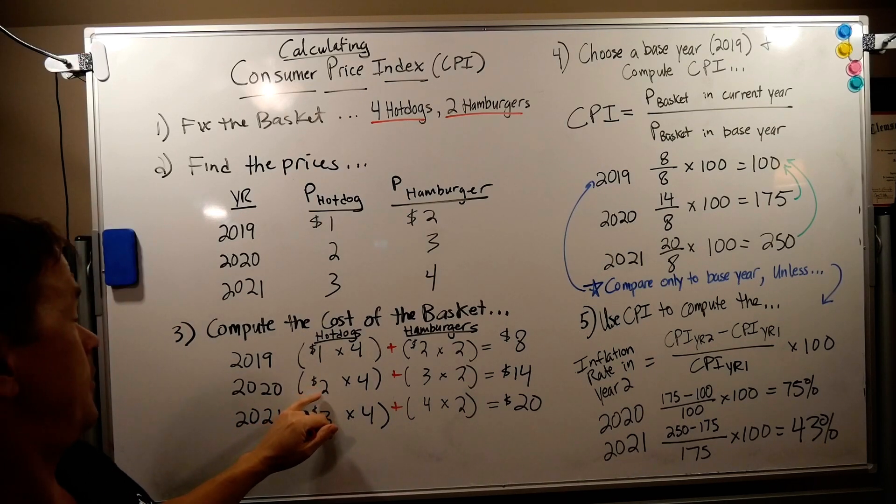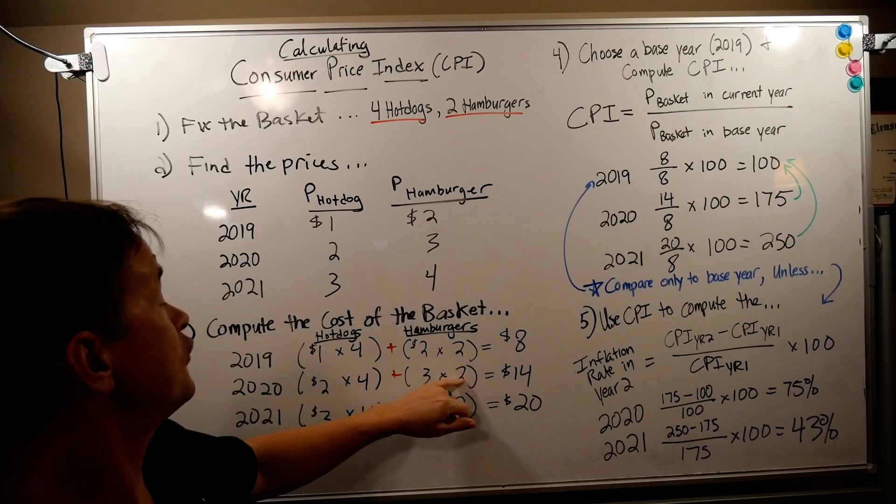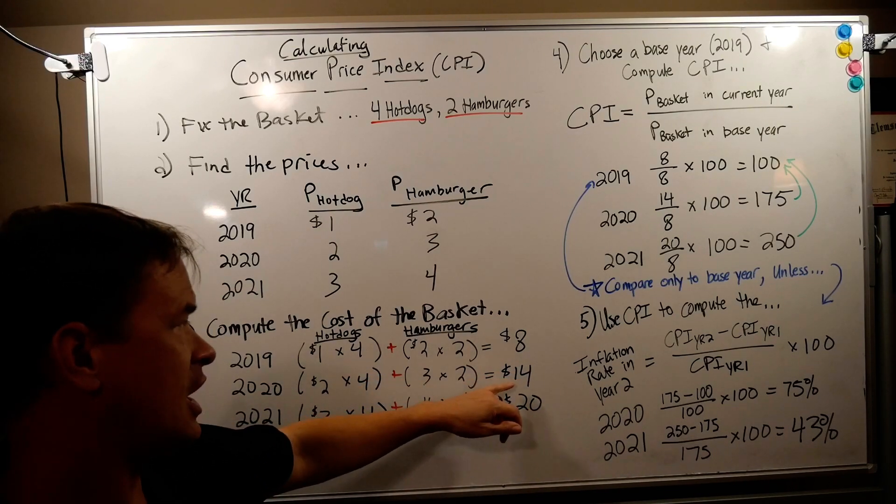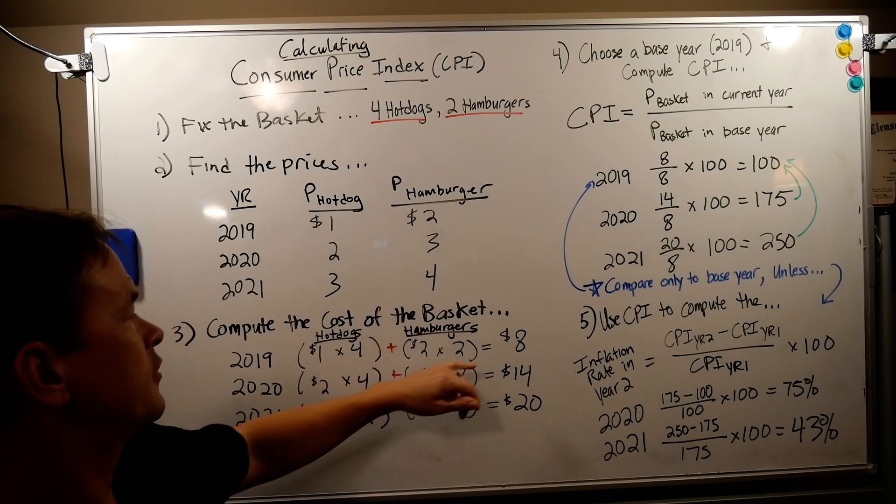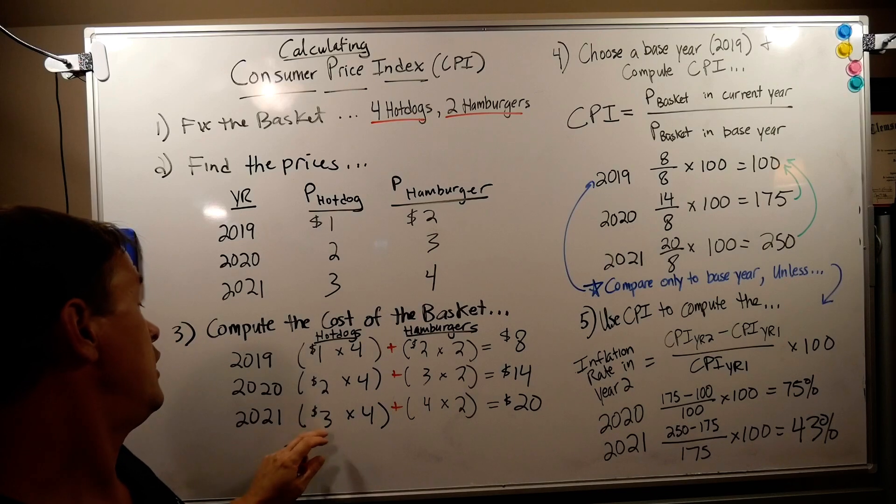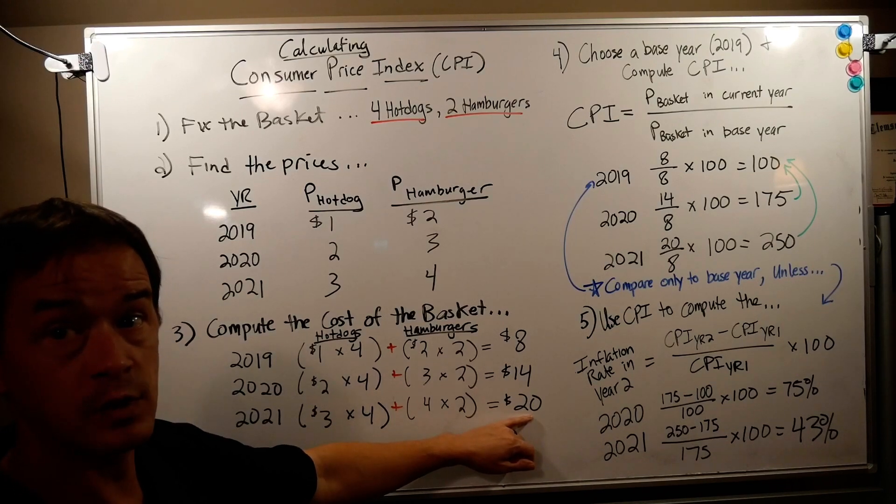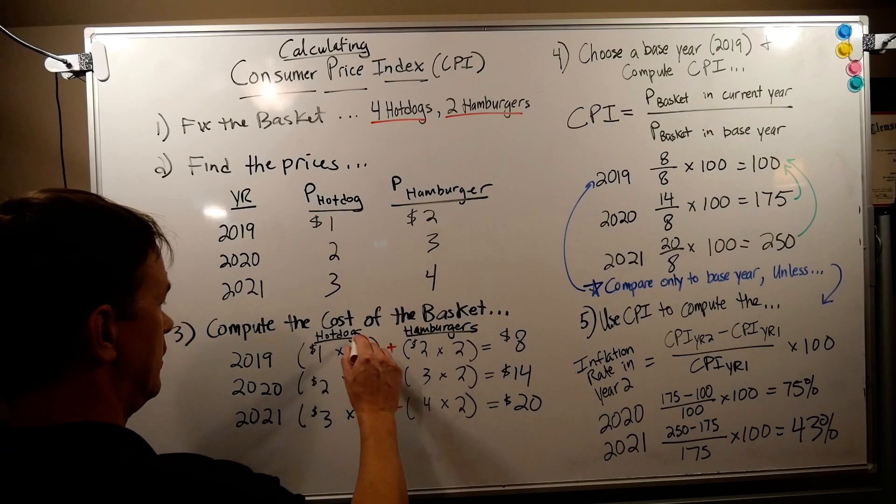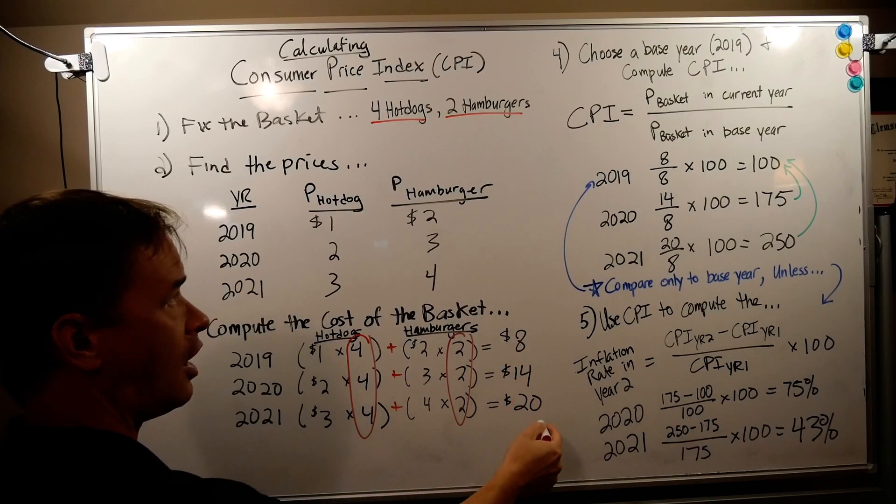2020, price is now $2, we're getting four of them plus two hamburgers at $3 and we get a total of eight plus six which is $14. So from 2019 to 2020 the cost of buying four hot dogs and two hamburgers went from $8 to $14. Your cost of living went up. 2021, three dollars for a hot dog, we're getting four again, four dollars for hamburger, we're getting two again, and checking out it's twenty dollars. If you've noticed prices go up over time, well that's inflation. We're buying the same thing, hot dogs and hamburgers in the same quantity, but prices are going up. We're seeing our cost of living go up.